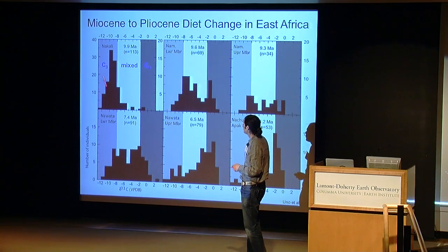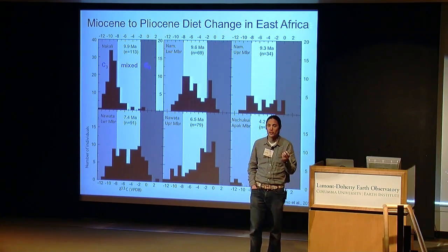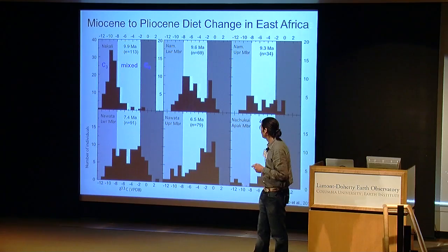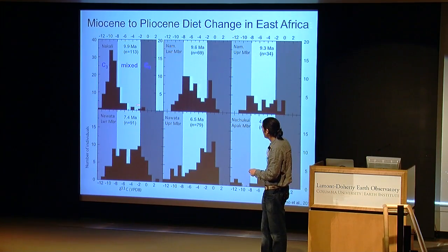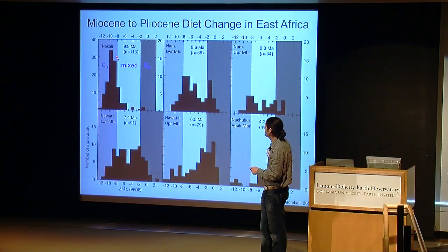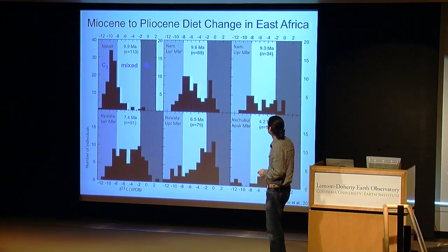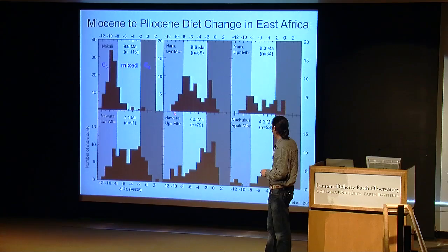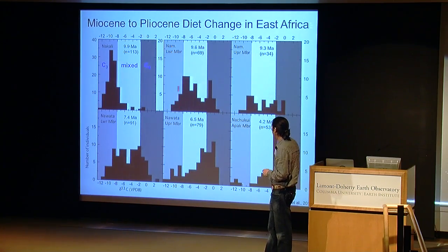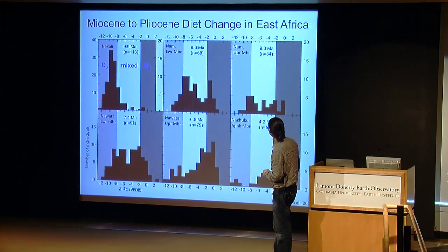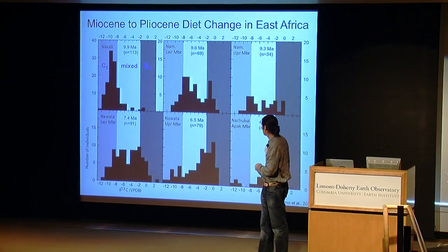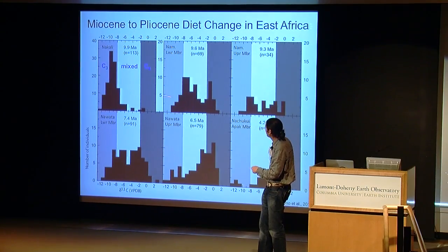Nakali is a really interesting site in East Africa because there's essentially no C4 consumers except for a few mixed feeders and three very odd equids — almost 100 samples are sitting in C3 space. Moving forward to the Namurungule, this is the first sort of bimodal distribution we see in the record, with both C3 and C4 consumers. This probably holds into the upper member, though we don't have enough numbers to resolve the distribution well.